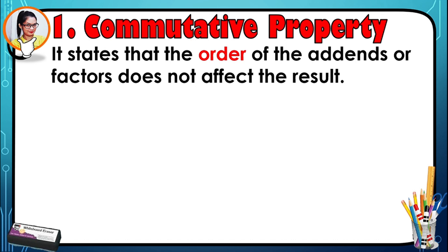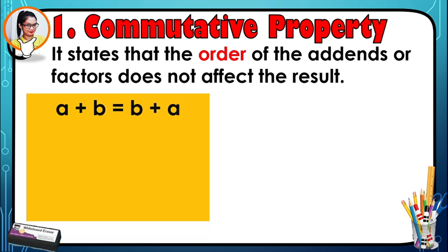Commutative property states that the order of the items or addends does not affect the result. For example, a plus b is equal to b plus a. Say we have 5 plus 3: here a is equal to 5 and b is equal to 3. Five plus three is equivalent to three plus five. Adding five plus three gives eight, and three plus five also gives eight. This proves that the order of the addends does not affect the result.